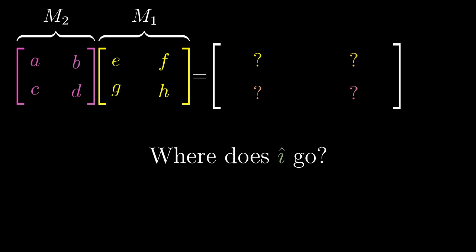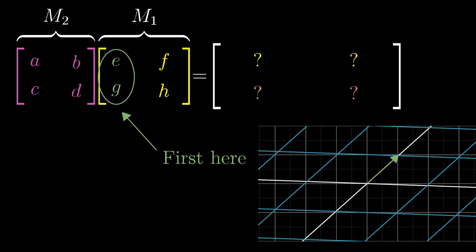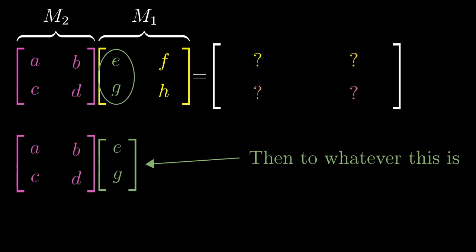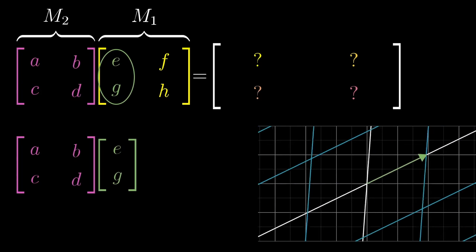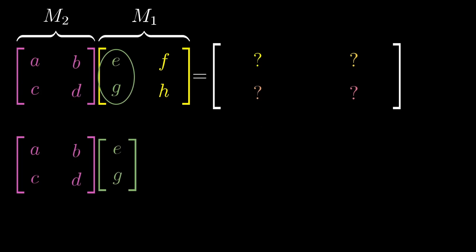To follow where i hat goes, start by looking at the first column of the matrix on the right, since this is where i hat initially lands. Multiplying that column by the matrix on the left is how you can tell where the intermediate version of i hat ends up after applying the second transformation.